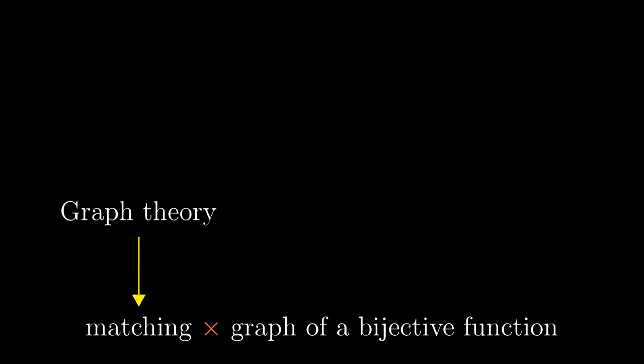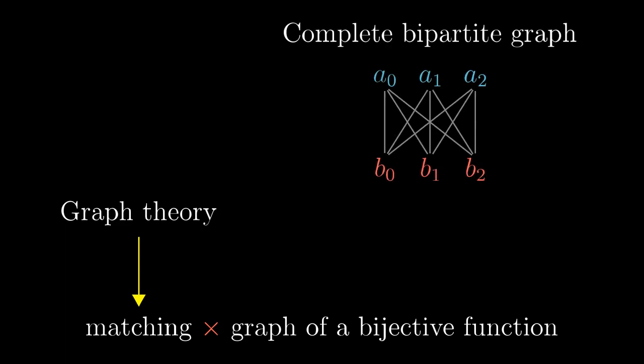It is a fun fact that the domain of mathematics working rather with matchings than with graph of bijective functions is graph theory. In the graph theory view, we start with the complete bipartite graph A times B. By complete we mean that there is an edge between every pair AB and bipartite because sets A and B form the two parts. What we call a matching here, and it corresponds to a bijective function, is called a perfect matching in graph theory. It is called perfect in contrast to a partial matching which doesn't have to cover all the vertices.